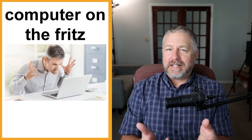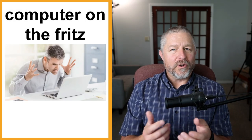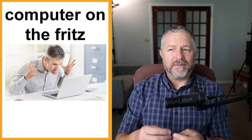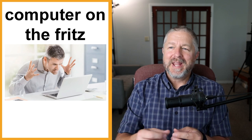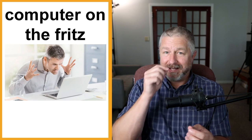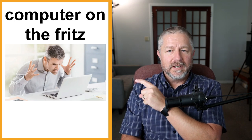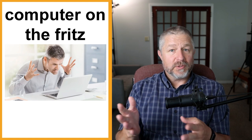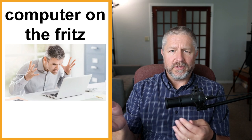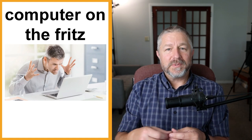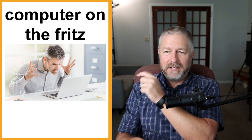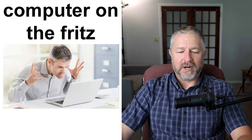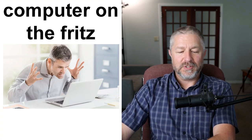When something is on the Fritz, it means it isn't working properly or not working at all. For example, if someone named Fritz Musterman was in the chat — Fritz, your name is in the lesson today. You could say, 'My printer's on the Fritz,' meaning your printer isn't working — maybe it prints one page when you try to print three, or doesn't print at all. If your computer isn't working, you might say, 'My computer is on the Fritz. It isn't working properly. I need to get it fixed.'